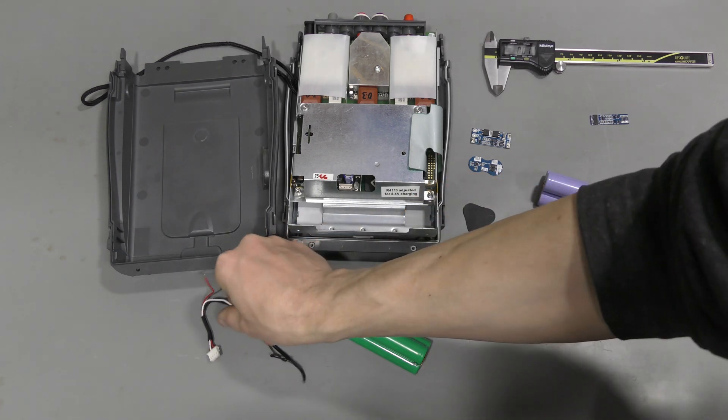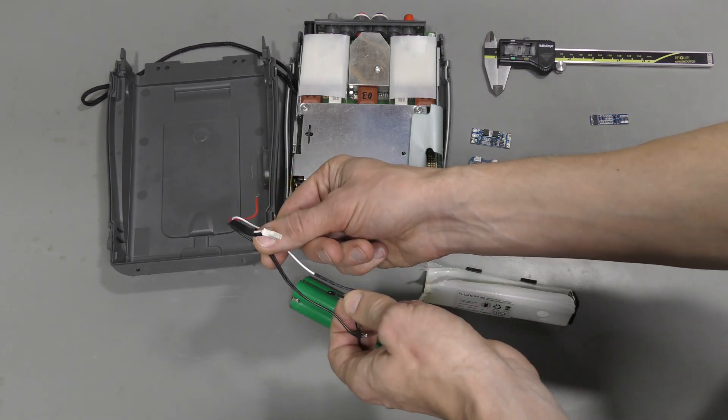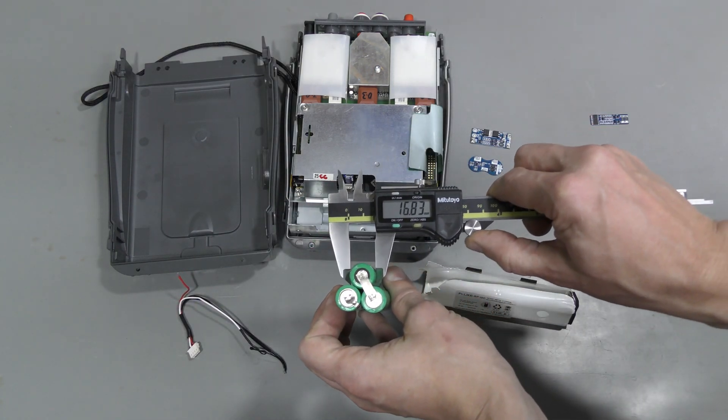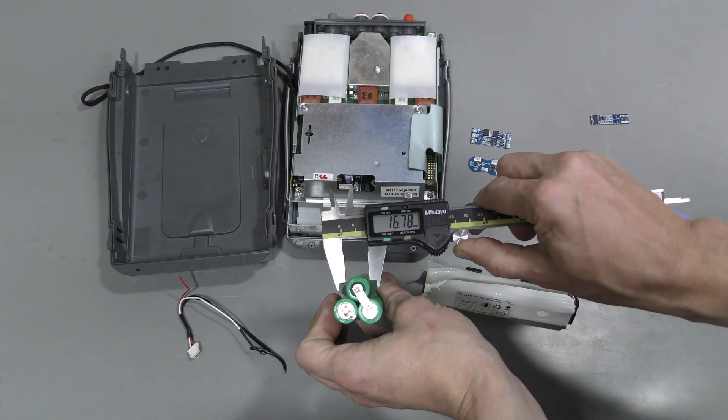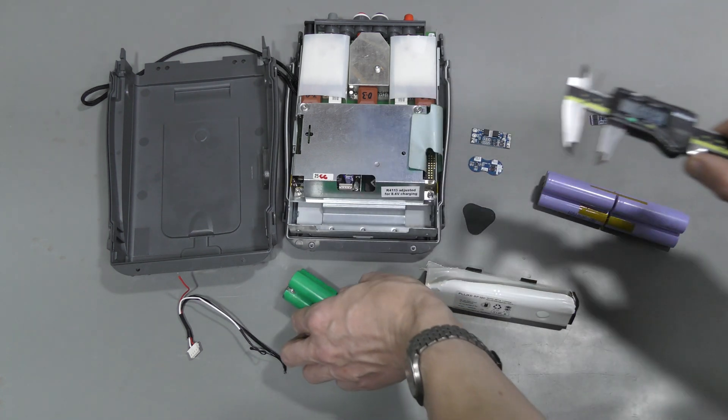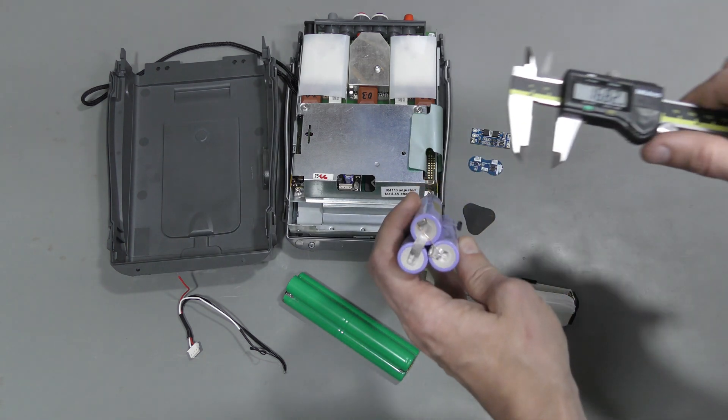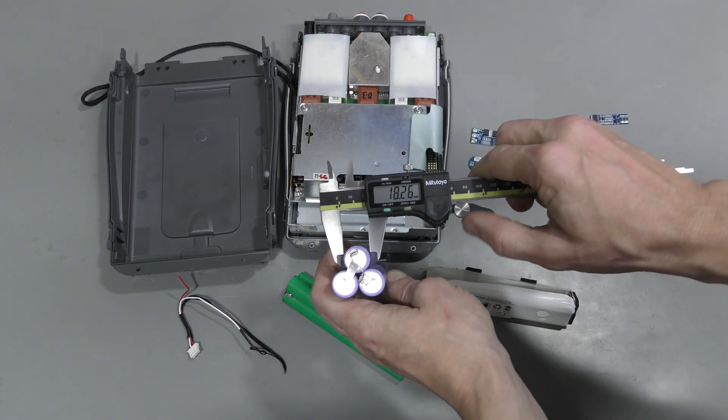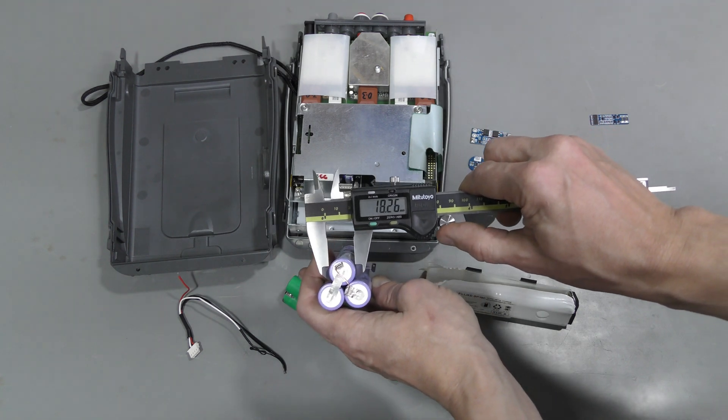I want to reuse this connector and this temperature sensor. Let's measure these cells, about 16.8 millimeters, and we can see that these lithium-ion cells are slightly larger, about 18.3 millimeters or so.